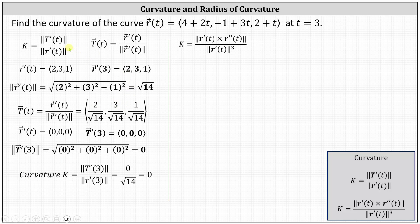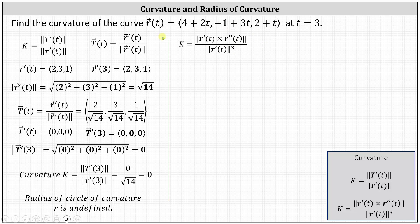This question doesn't ask, but since the curvature of a line is zero, the radius of the circle of curvature — which is always the reciprocal of the curvature — is undefined. This should make sense: if r of t is a line, there is no circle of curvature. Now let's use the formula on the right to verify we get the same result for the curvature of r of t.